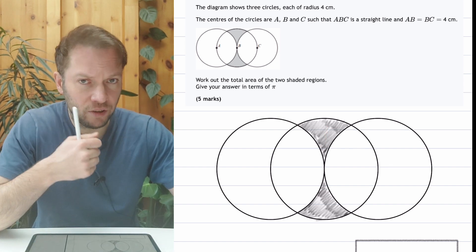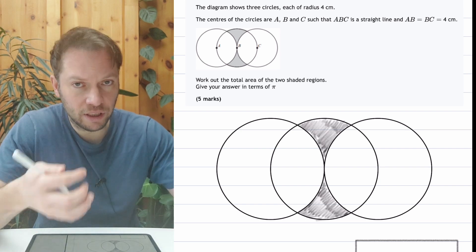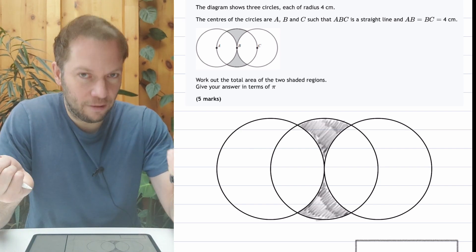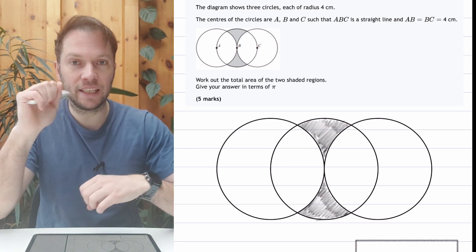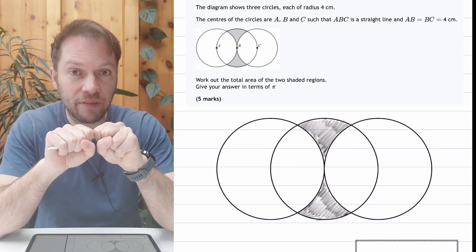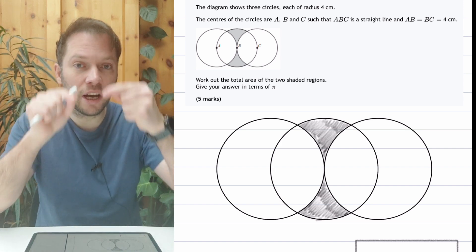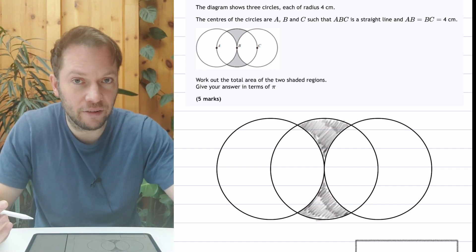When it comes to complicated regions like that you're trying to find the area of, I like to think of it like this: How would you make it out of paper? You could take different bits of paper and stick them together, so you add the areas, or you start with a shape and then you cut out of it, so you subtract areas.